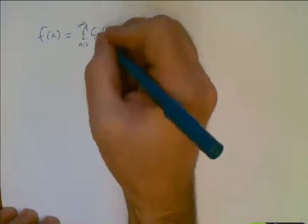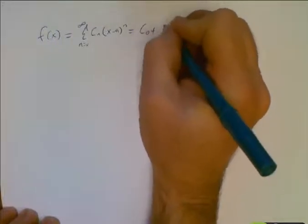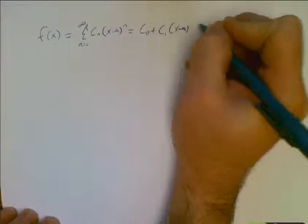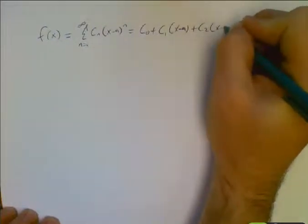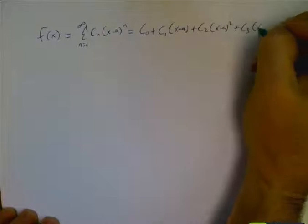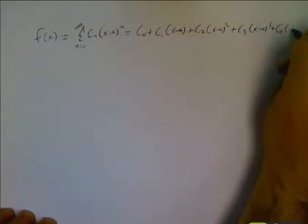So if you list them out, at 0 you have c sub 0, so there's just a constant, plus your first constant times x minus a to the first, plus your second constant times x minus a to the second, plus your third constant, x minus a to the third. You can get another one in there. Your fourth constant, x minus a to the fourth.